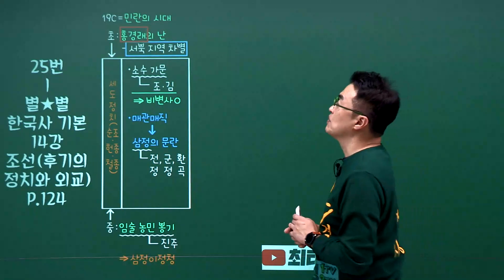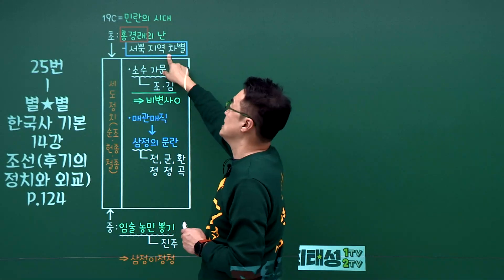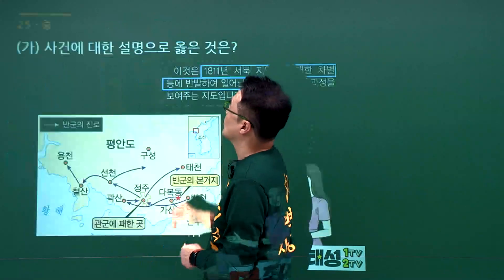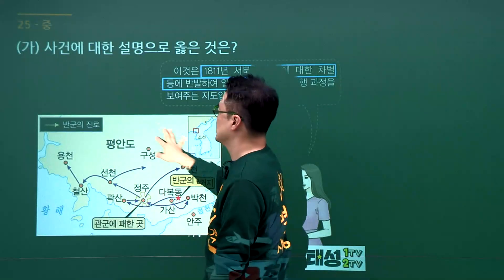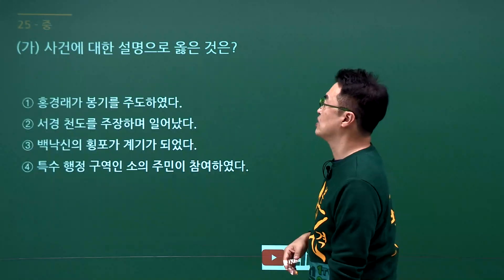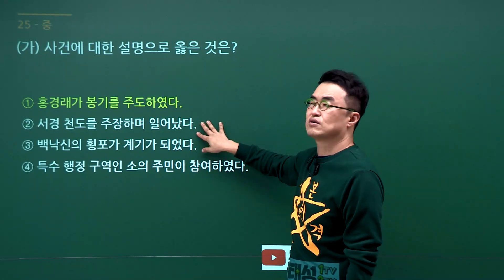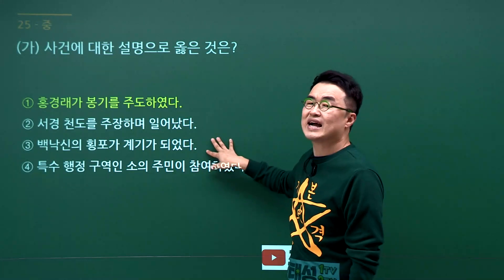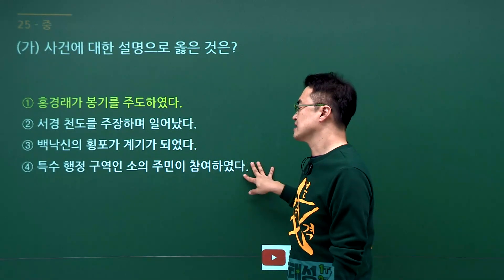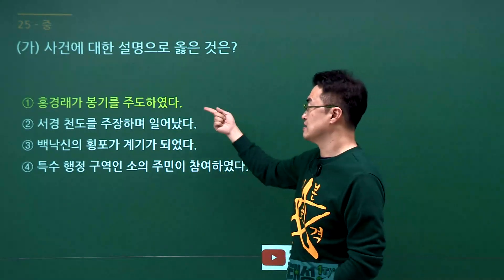19세기 농민봉기 문제입니다. 서북지역의 차별에 의해 일어난 것이 홍경래의 난입니다. 문제에서 특히 정주 서북지역이 나왔으니 홍경래의 봉기임을 알 수 있습니다. 정답은 1번입니다. 서경천도 주장은 고려시대 묘청의 서경천도 운동이고, 백낙시 내맹포는 임술농민봉기, 특수행정구역 소 주민 참여는 망이 망소이의 난으로 고려시대입니다. 정답은 1번입니다.